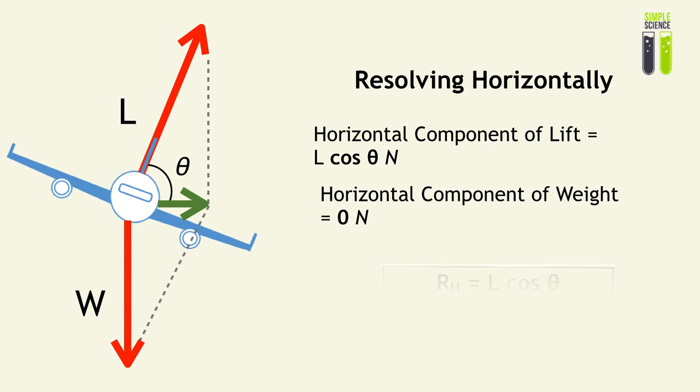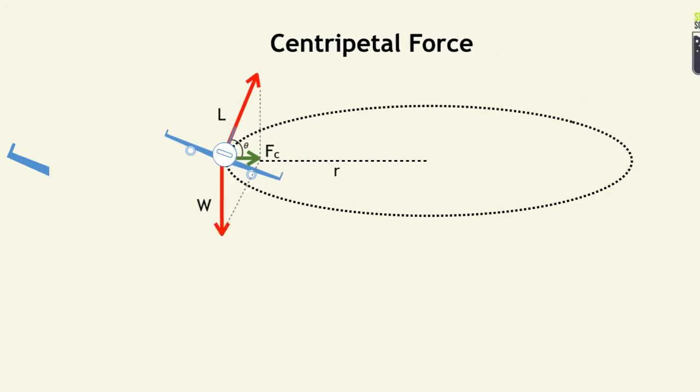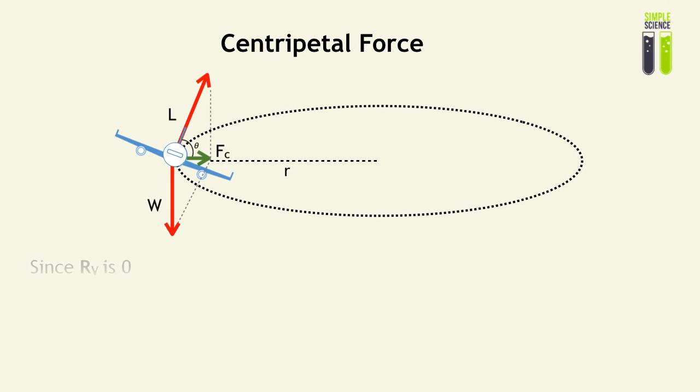And the horizontal component of the resultant force is therefore equal to L cos theta. And this is very important when we're trying to calculate the centripetal force. Since we know that the vertical component of the resultant force is equal to zero, the horizontal component of the resultant force must be the resultant force.